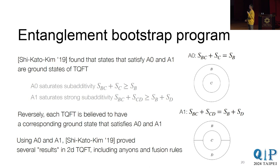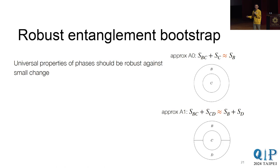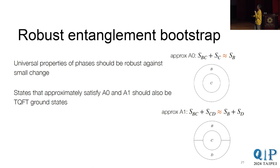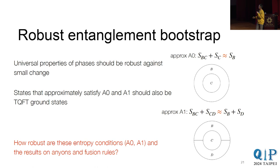And indeed, using these conditions, they can actually recover several results about 2D TQFTs, including anyons and fusion rules. So the reason I put this quotation mark on results is because usually they're assumed. So what we can do now is we can take some physical assumptions and then derive what people assumed in these TQFT settings. So that's good. But as I said, phases are robust against changes. And so that means we should believe that states that only approximately satisfy A0 and A1, they should also be TQFT ground states.